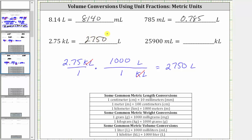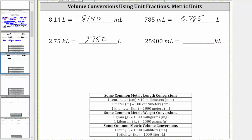For the last example, we want to convert 25,900 milliliters to kiloliters. We begin by writing the beginning units as a fraction with the denominator of one. Notice how there's no direct conversion from milliliters to kiloliters. We will first convert milliliters to liters using the conversion one liter equals 1,000 milliliters, and then we'll convert liters to kiloliters using the conversion one kiloliter equals 1,000 liters. Because we have to use two conversions, we will need two unit fractions for this example.